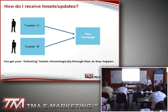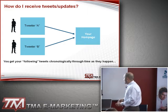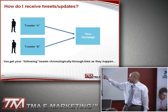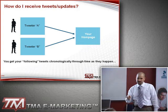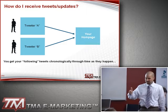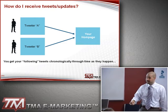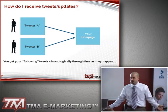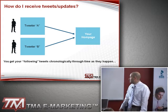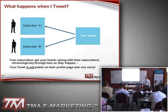I want to diagram how this all works together because some people get hazy on it. How do you receive tweets and updates? Assuming you're following Twitter A and Twitter B, as they post tweets, you chronologically get them in order by time. If you're following 2,000 people, everything comes in chronologically — that's why it can get disorganized very quickly. There's no way someone like Ashton Kutcher can read what a million people are saying. Vice versa, your tweet goes to your subscribers who are following you.